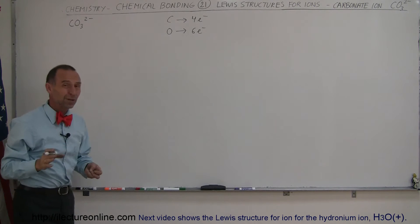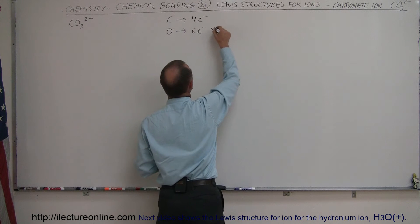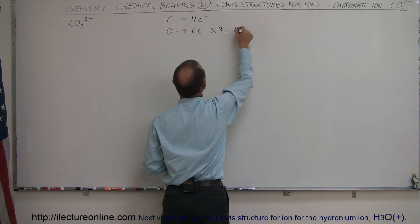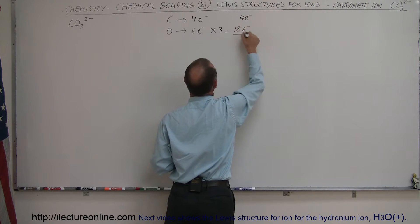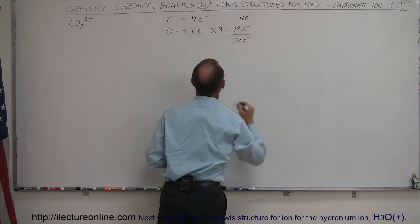Alright, there's three of those, so let's multiply that times three. It gives a total of 18 valence electrons, four for the carbon for a total of 22 valence electrons.